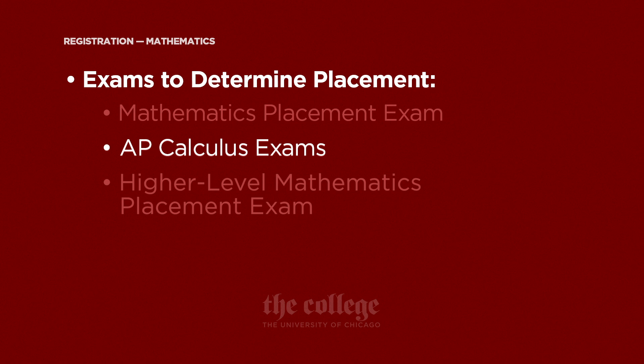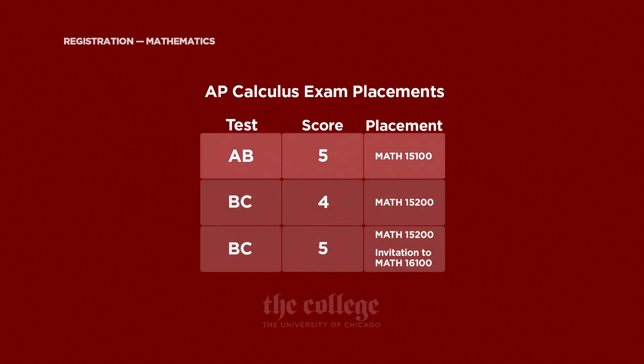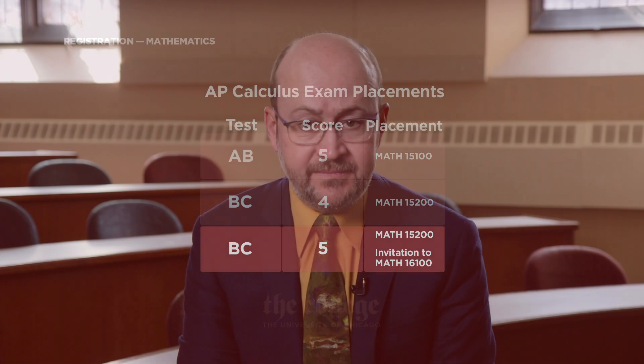You may also receive a placement based on your scores on the AP calculus exams. If you have a score of 5 on the calculus AB test, you'll receive a placement into math 151. A score of 4 or 5 on the calculus BC test will give you a placement into math 152. If you have a score of 5 on the BC calculus exam, you'll also receive an invitation to try math 161, our honors calculus sequence. To make either of these placements, we'll need your official AP scores, so don't forget to have them sent to the University of Chicago right away.